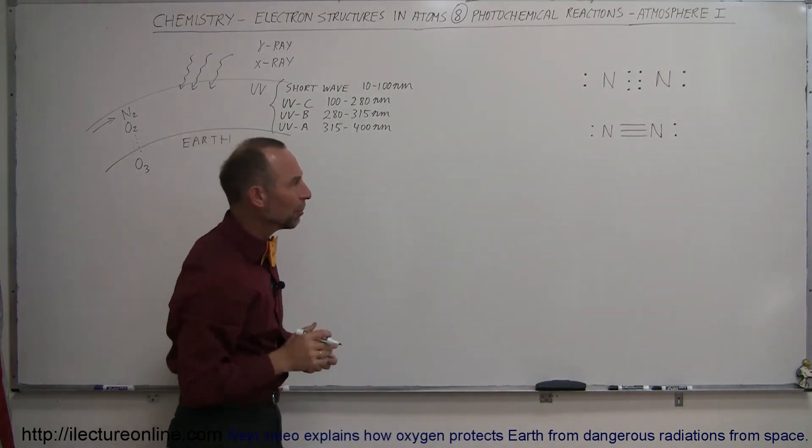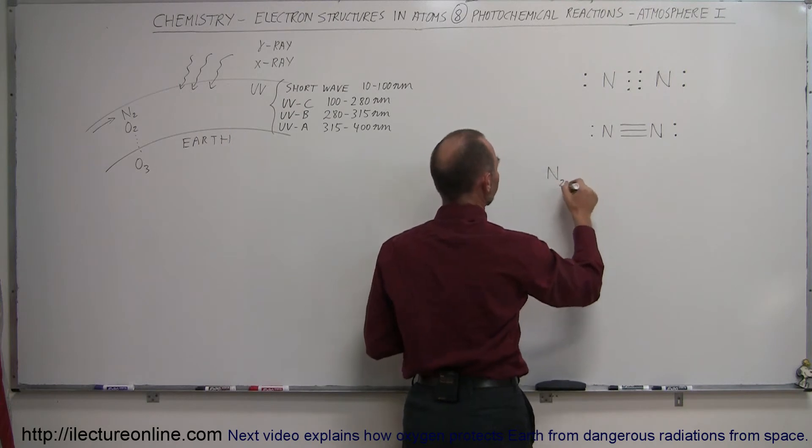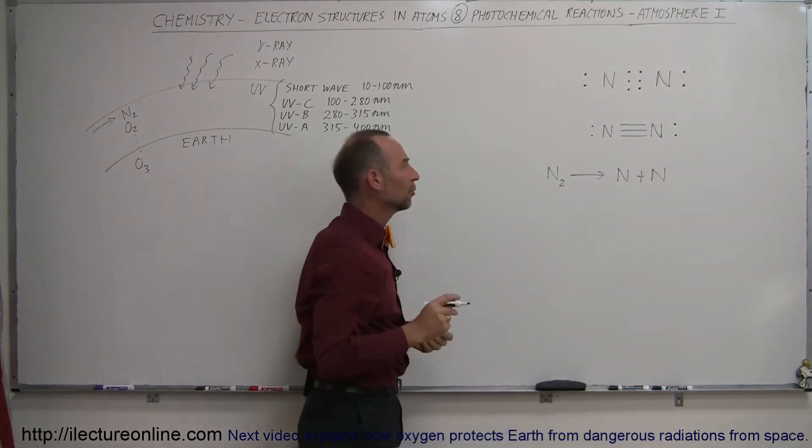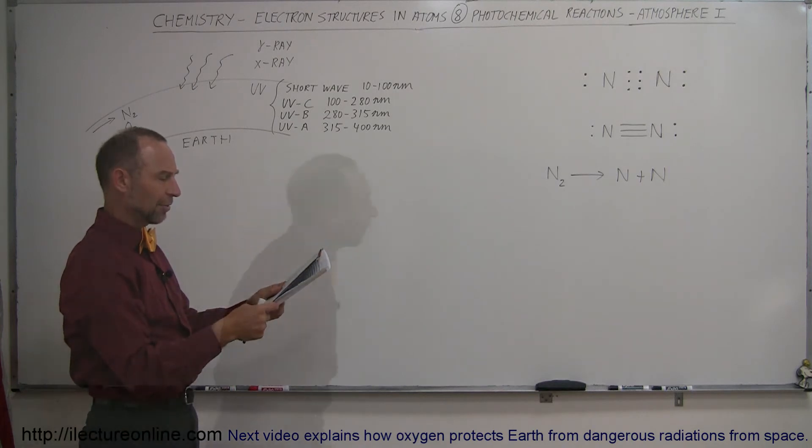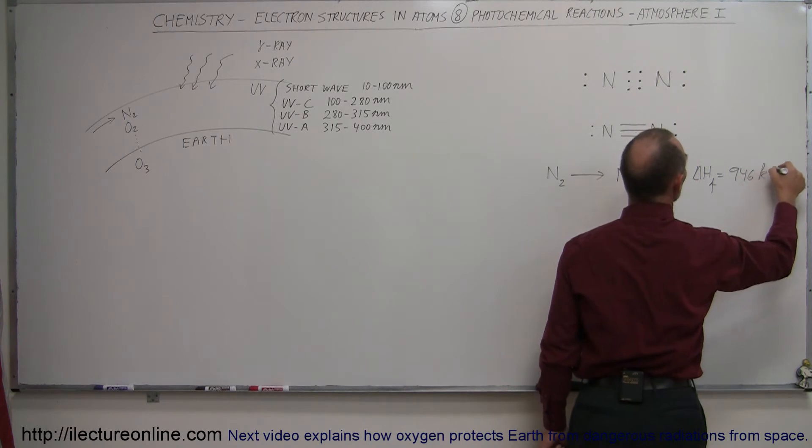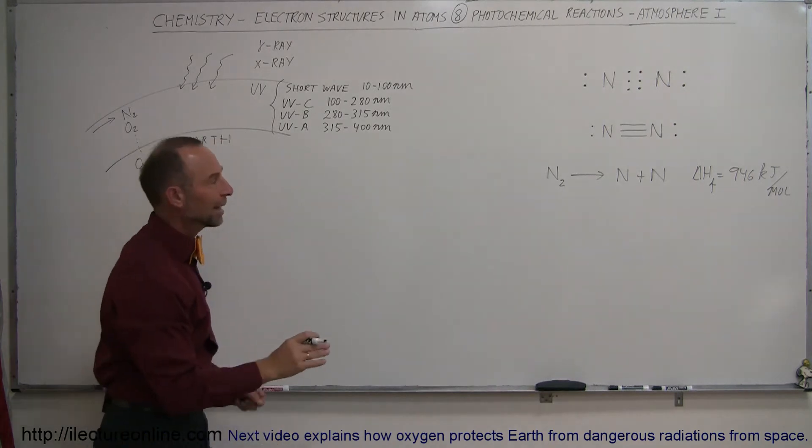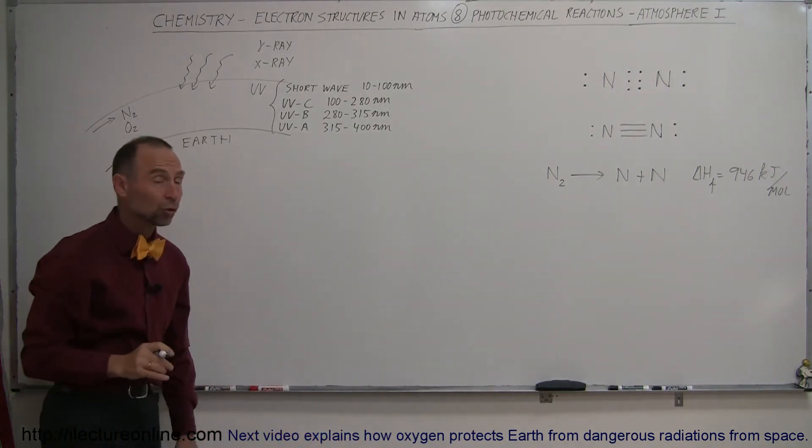The energy of formation of a triple bond, so if you want to break up an N2 molecule and turn it into two atoms of nitrogen gas, the enthalpy of formation, delta H of formation, is equal to 946 kilojoules per mole. So for each mole of nitrogen gas that gets dissociated into its individual nitrogen atoms, you require 946 kilojoules for every mole.